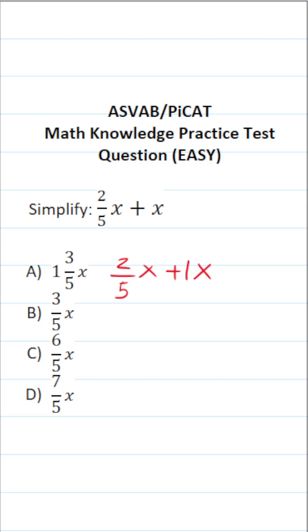Now, in order to add fractions, they have to have the same or a common denominator. So how am I going to rewrite one x such that it has a denominator of five? Well, this is going to become two-fifths x plus five over five x. Again, five over five is one.